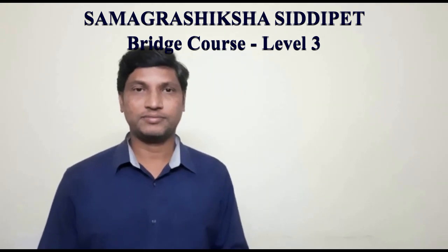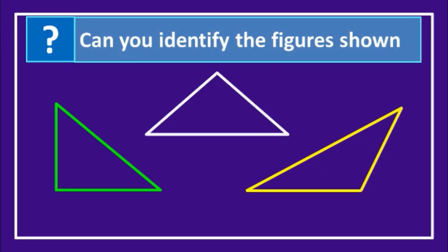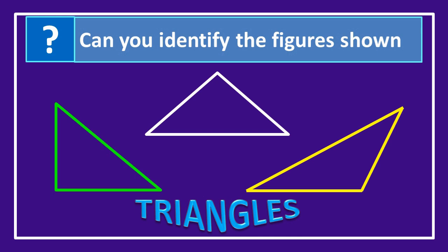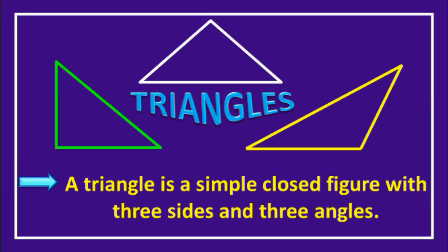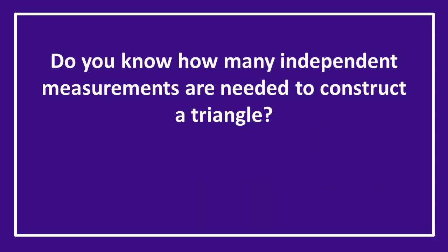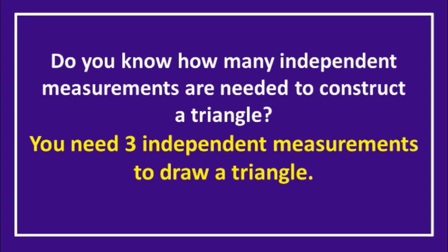Look at the images shown on your screen. Can you identify the figures shown? Yes, they are triangles. A triangle is a simple closed figure with three sides and three angles. Do you know how many independent measurements are needed to construct a triangle? You need three independent measurements to draw a triangle. Now let us see what those three independent measurements are.